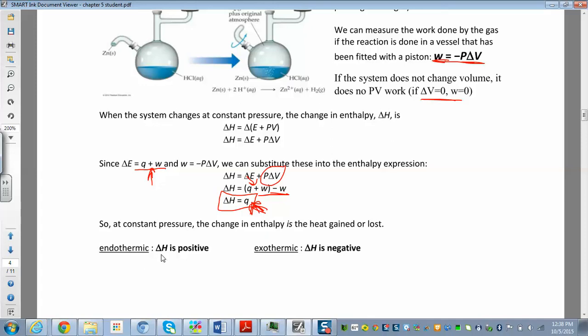Endothermic is if ΔH is positive. So now we can use these terms again, but instead of just talking about internal energy, we will relate it to enthalpy. So ΔH is positive for an endothermic reaction, and it's negative for an exothermic reaction.